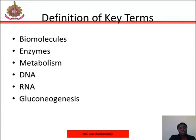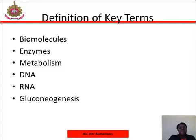As this course goes on, you will get to understand more basic concepts of these terminologies. DNA, deoxyribonucleic acid, is a molecule that encodes the genetic instructions used in the development and functioning of all living organisms and many viruses. Ribonucleic acid, or RNA, is a ubiquitous family of large biological molecules that perform multiple vital roles in the coding, decoding, regulation, and expression of genes. Gluconeogenesis is a metabolic pathway that results in the generation of glucose from non-carbohydrate carbon substrates such as pyruvate, lactate, glycerol, glucogenic amino acids, and fatty acids.